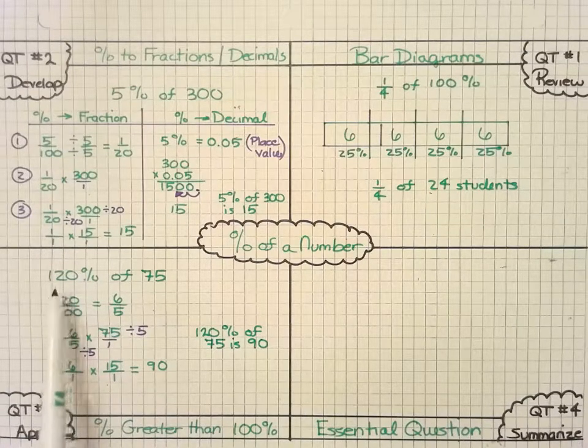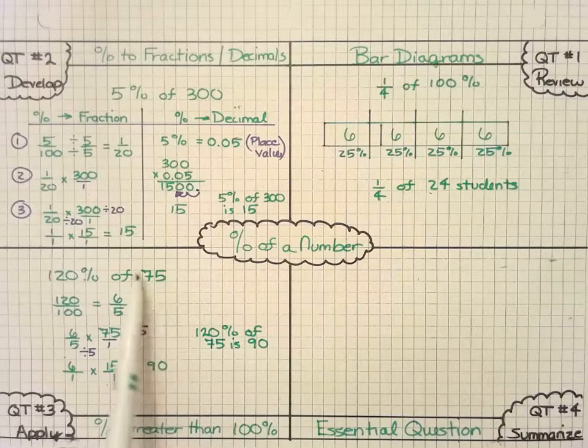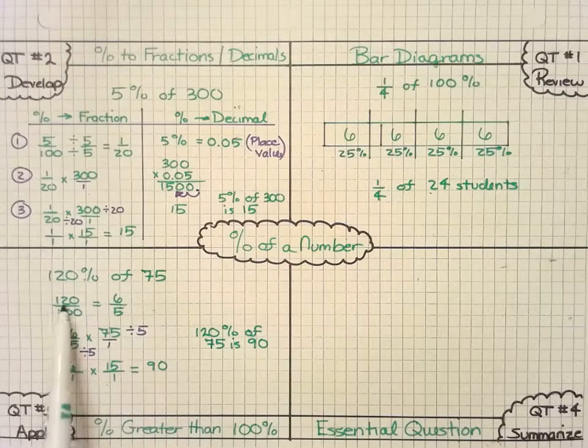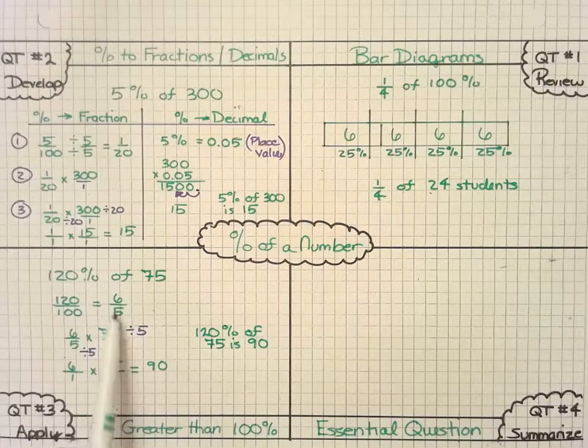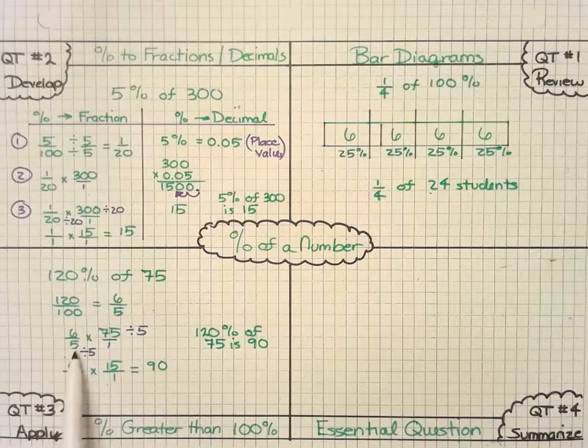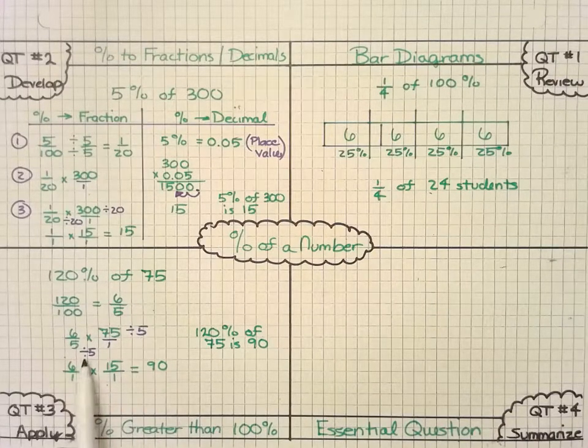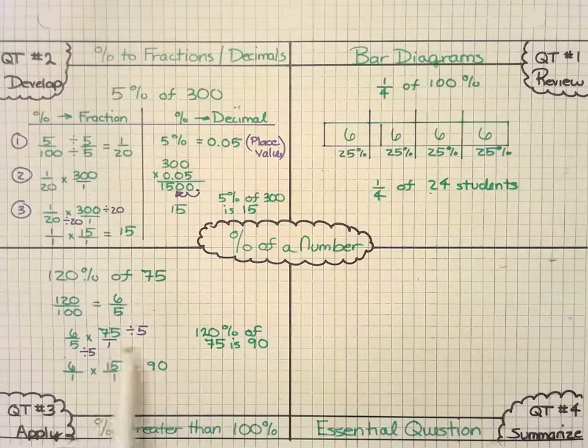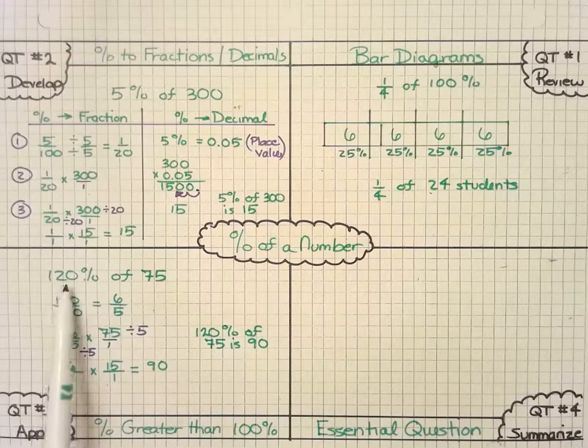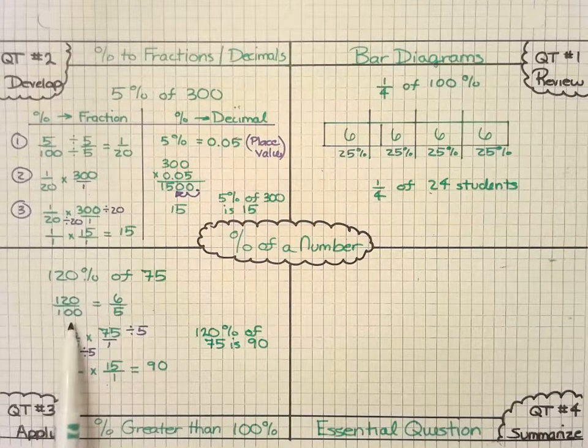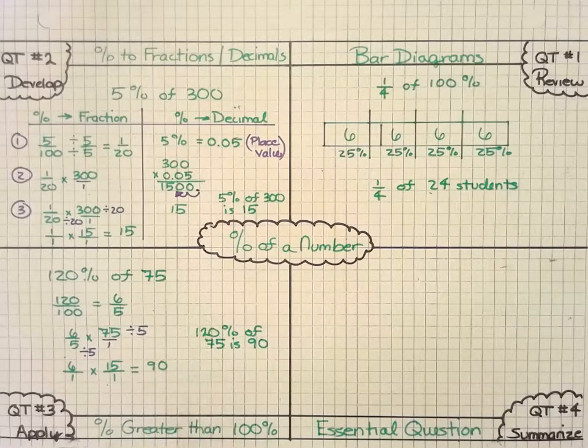So if I have a percentage that's greater than 100%, and I'm trying to find that value of a particular number, I can place the 120%, or any percent greater than 100, over the 100, and simplify that fraction. And then I can use that fraction and multiply by the number that I have to find what the new value will be. Here I simplify by dividing the numerator and the denominator by 5, and I get 90. Now notice how the 120% is greater than 100%. That means my answer, 90, should be greater than 75, and in this case it is.